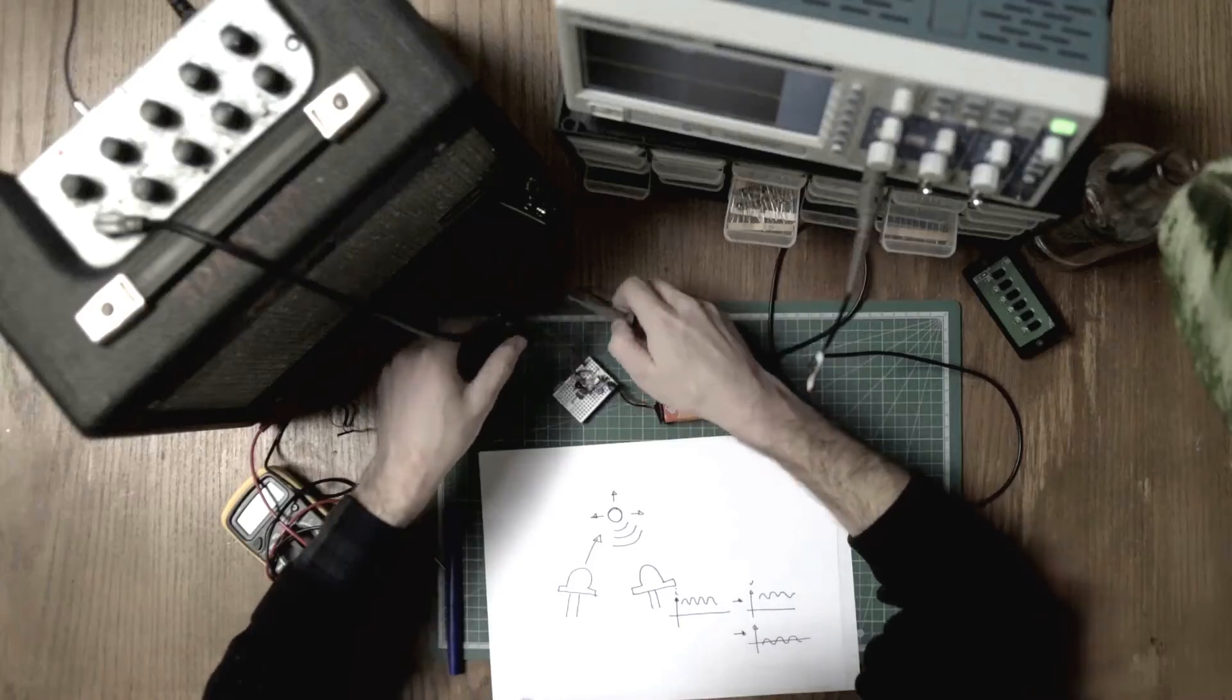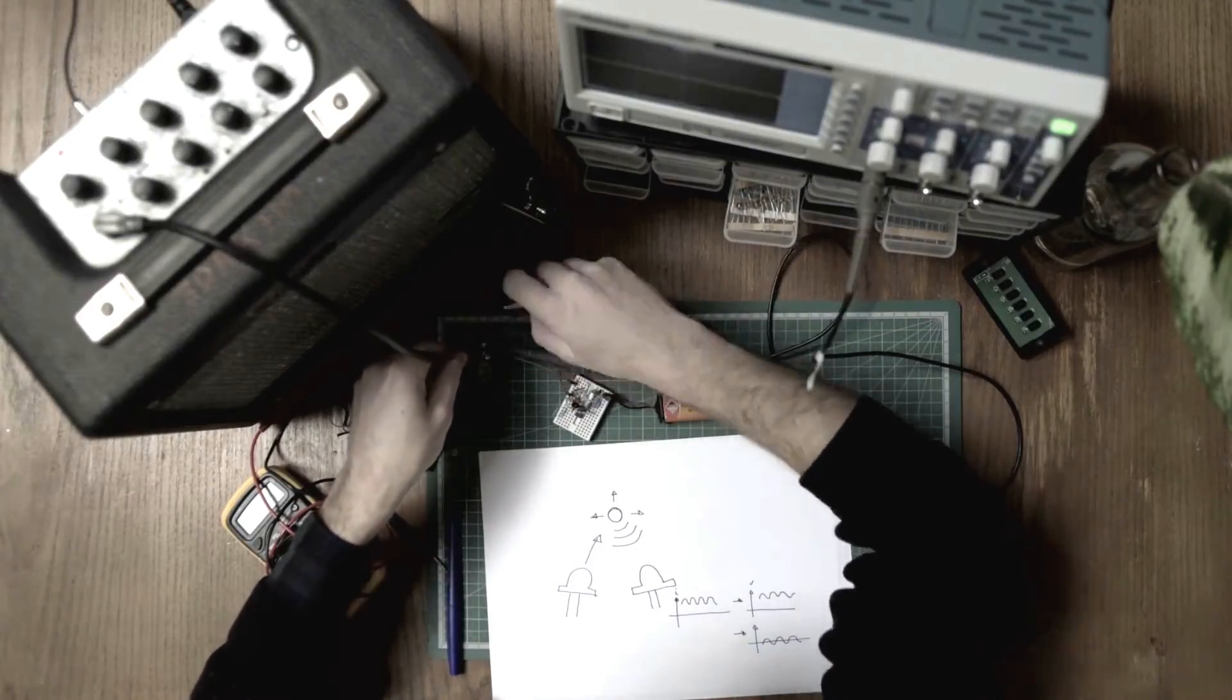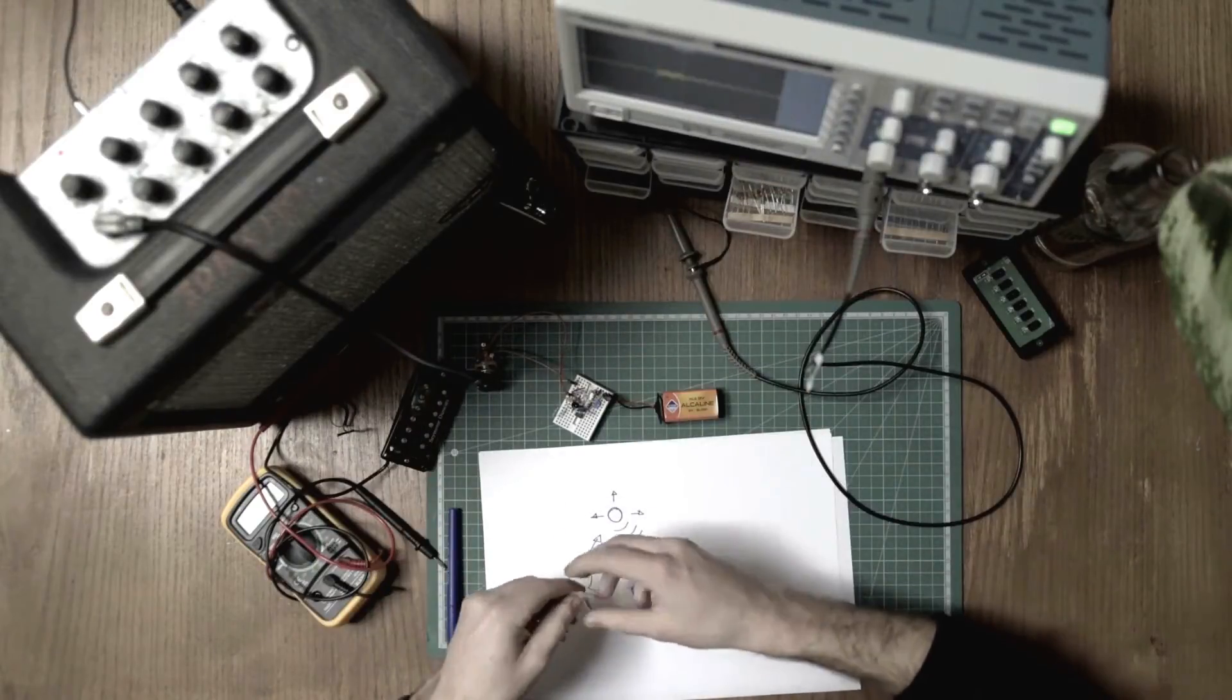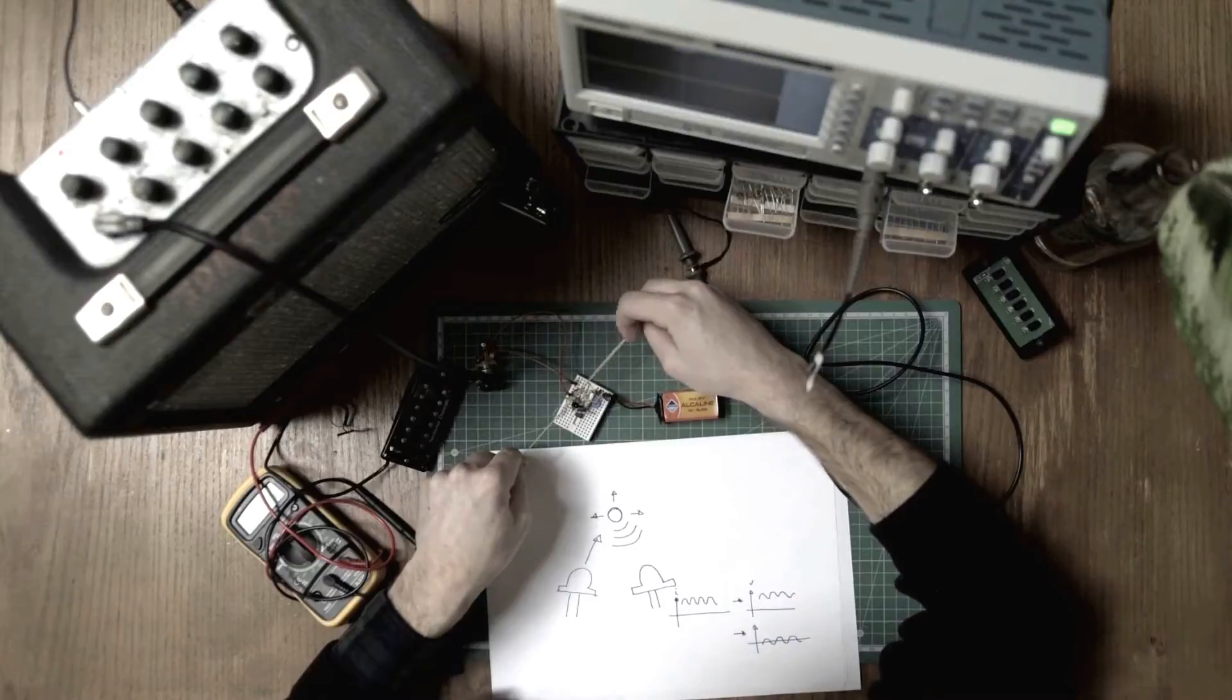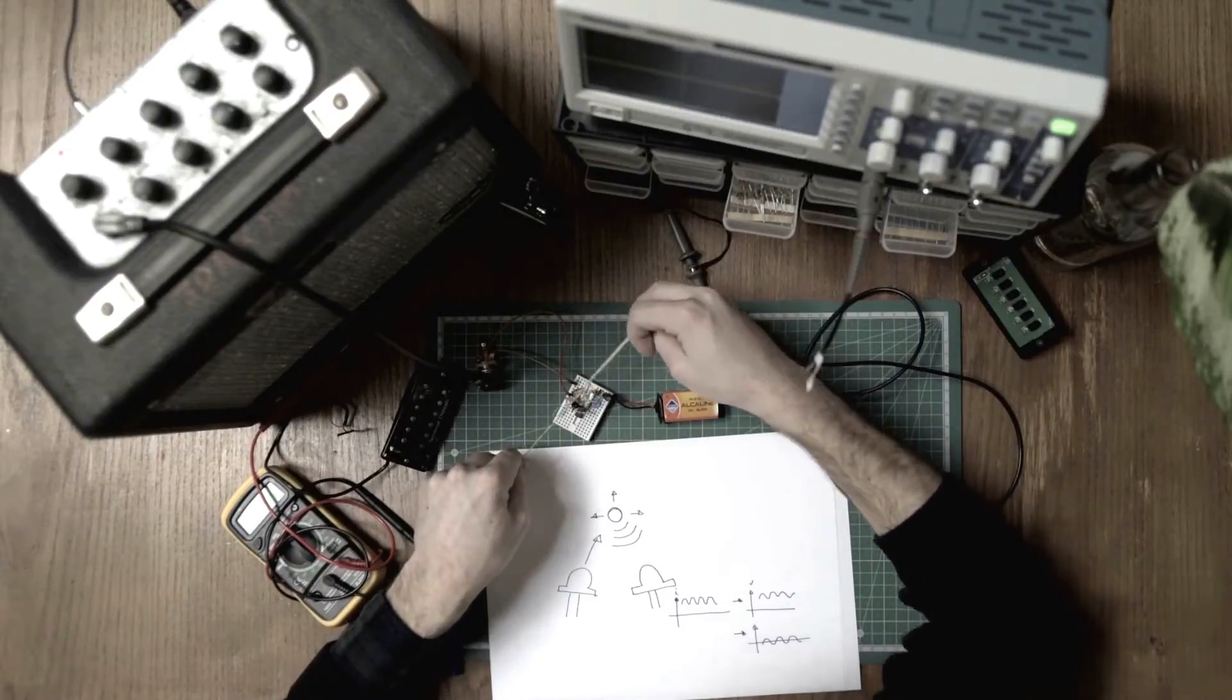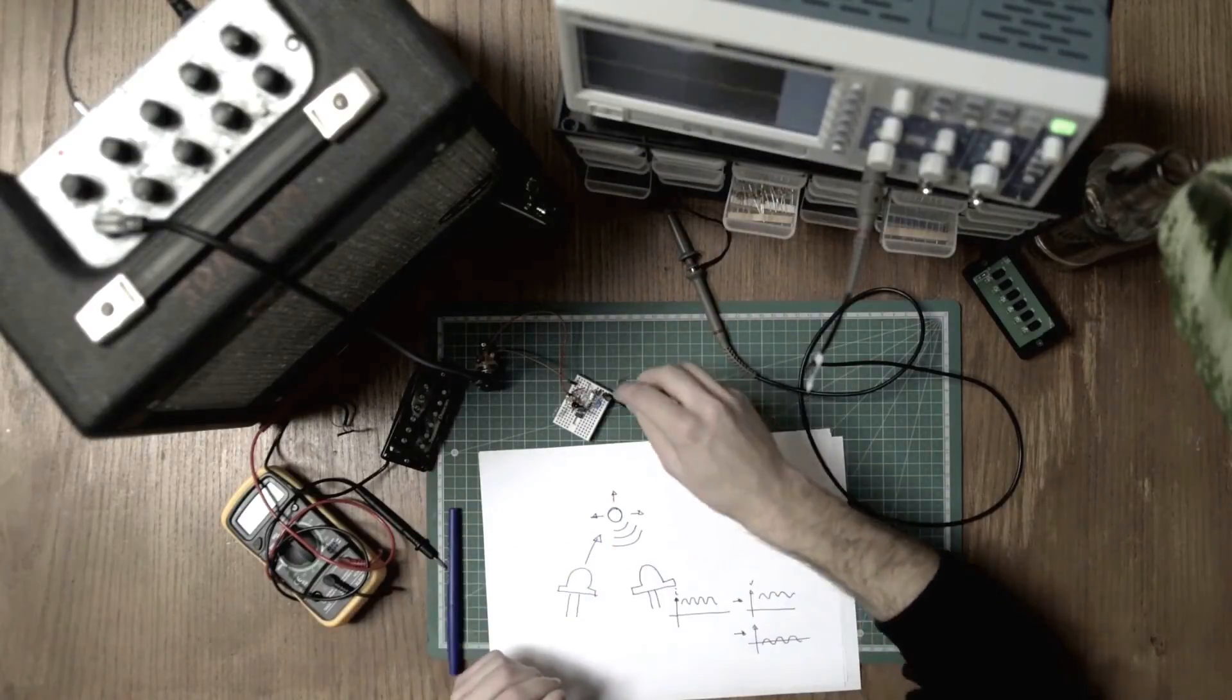So now let's hear what it does on this little Fender amp. I pluck the string, and you can see there is a perfect image of the sound of this elastic band.